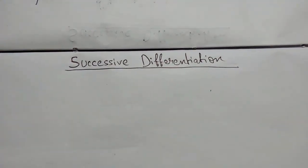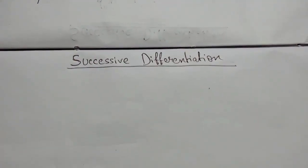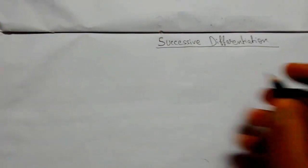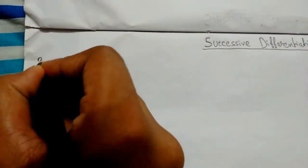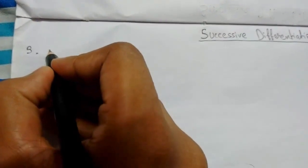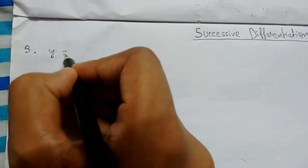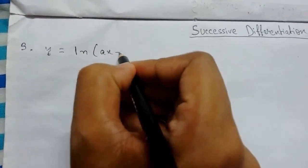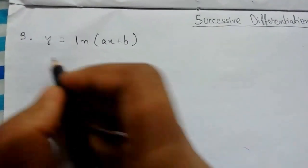Welcome back guys. Today we'll be learning about successive differentiation, continuing from where we left off. We'll be doing the third type, which is if y equals ln(ax + b).